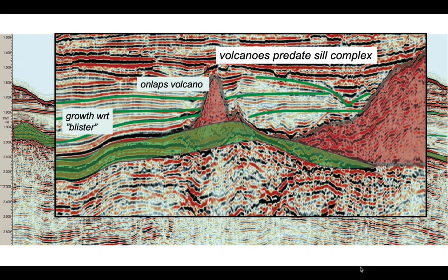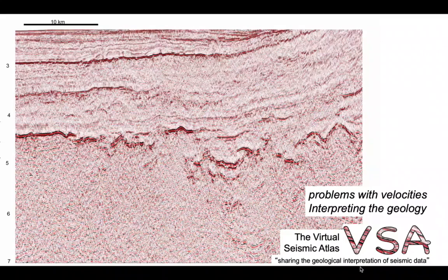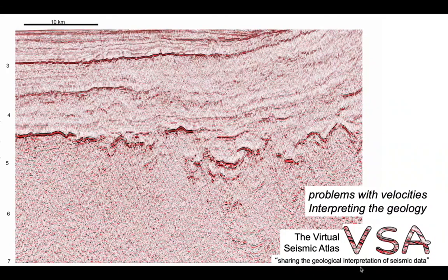Since the volcanic cones were already present before the blister fold developed, the volcanoes predate the sill complex. They were therefore probably not fed by the sills — they are of different ages. The seismic stratigraphy thus allows us to work out the volcanic and igneous history of this part of the Browse Basin. To summarize: we've examined the imaging issues that igneous rocks generate, and how we can interpret igneous geology by tying it to the seismic stratigraphy of the surrounding reflectors.